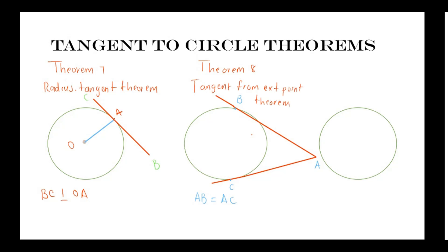Theorem 9 is the tan-chord theorem. This theorem states that if you have an angle formed between a tangent and a chord at the point of tangency — the point where the tangent touches the circle — then this angle will be equal to any other angle in the alternate segment.